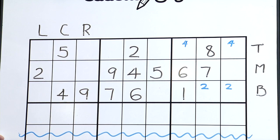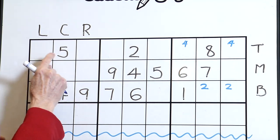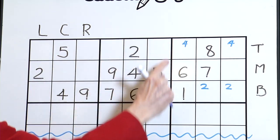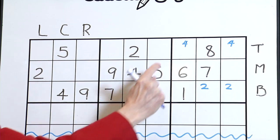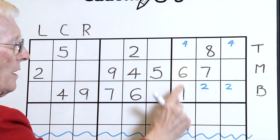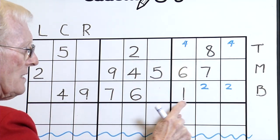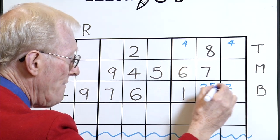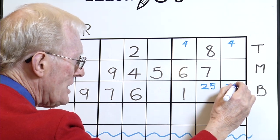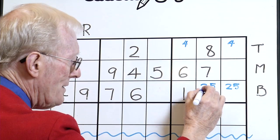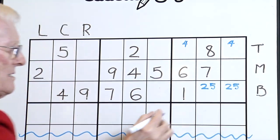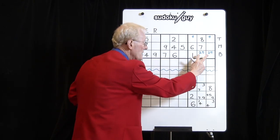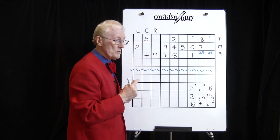Now fives — this is interesting. Here's a five on the top, here's a five in the middle of this block, so the five has to go in the bottom of this block, there or there. And guess what? We have a matching pair. That means that no other number can go in those two cells, and that's very important.